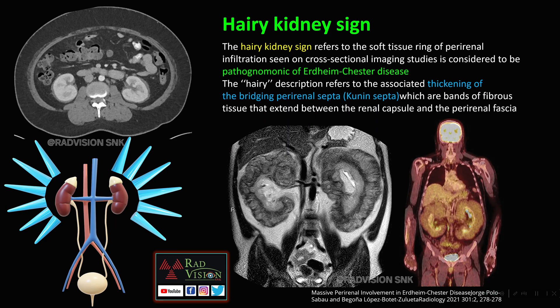Next, the hairy kidney sign. The hairy kidney sign is nothing but a soft tissue ring of perinephric infiltration seen on cross-sectional studies. This is pathognomonic of Erdheim-Chester disease. The hairy description refers to thickening of the bridging perinephric septa, or Kunin septa, which are bands of fibrous tissue that extend between the renal capsule and the perinephric fascia.